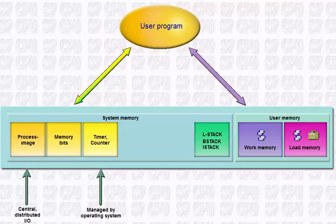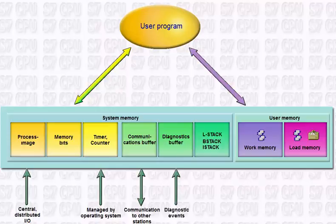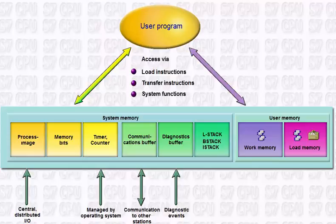Additionally, the system memory contains buffers for communication jobs to other stations and system message buffers for all of the diagnostics events of this station. The classification of memory areas and access methods by the user program is independent of the selected programming language or the CPU type. This uniformity is the basis for easily reusing programs and libraries also across different CPU types.